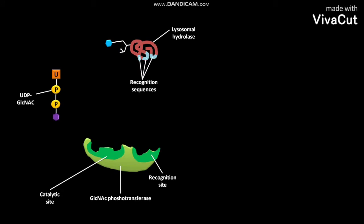This is a GlcNAc phosphotransferase having a catalytic site and a recognition site. This is the UDP-GlcNAc. This is the lysosomal hydrolase having different recognition sequences, an N-linked oligosaccharide, and a terminal mannose residue.